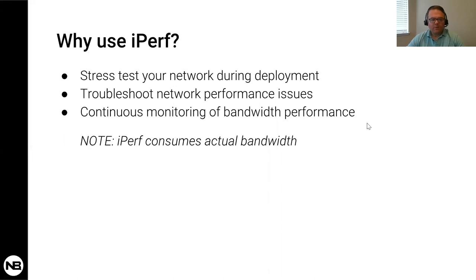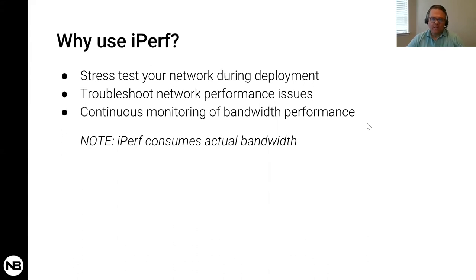The third use case is continuous monitoring — running iPerf periodically, say once an hour or three times a day, collecting data points, creating statistics and a baseline, and using that for alerting. For example, if you see the bandwidth drop from your baseline, that's a notification that something went wrong. Keep in mind that when you run an iPerf test, you consume actual bandwidth, so don't run it too often. Running iPerf every minute and consuming 100–200 Mbps each time defeats the purpose of monitoring.